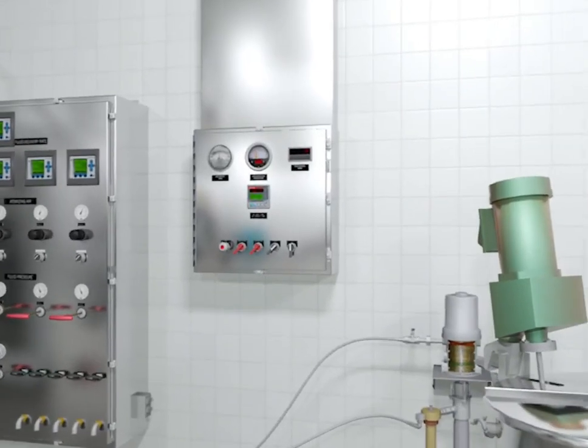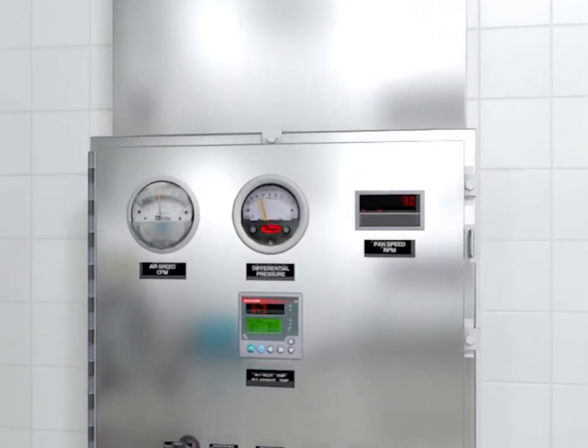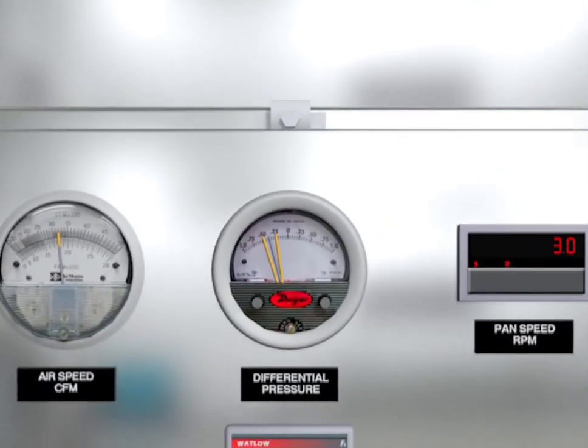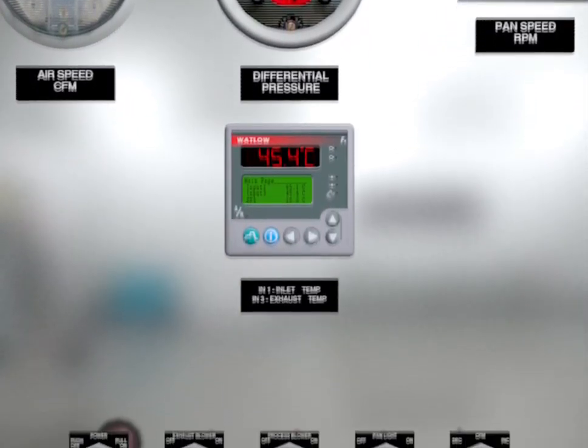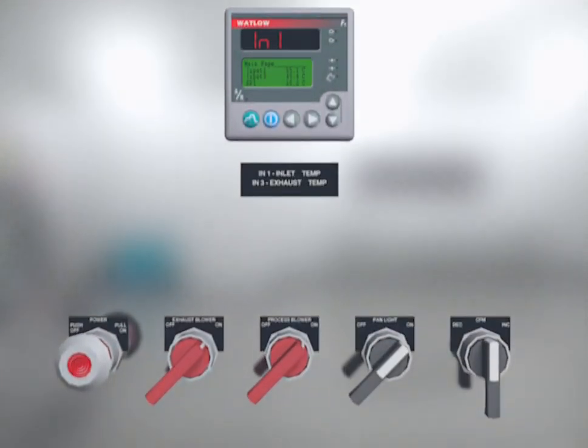The airflow is regulated for temperature and volume to control drying rates, while maintaining a slightly negative drum pressure relative to the room to isolate the operator from product dust and overspray.